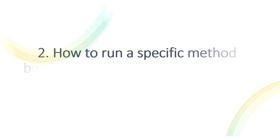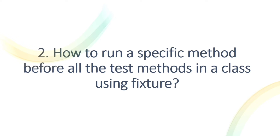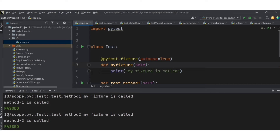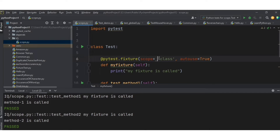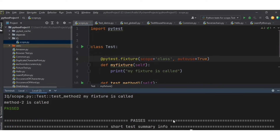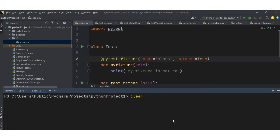The next question is: how to run a specific method before all the test methods in a class using a fixture? The difference from the first question is that here we want to run the fixture only once but before all test methods. We just change the scope parameter — instead of scope='function', provide scope='class', meaning it will be called only once before all test methods in the class.